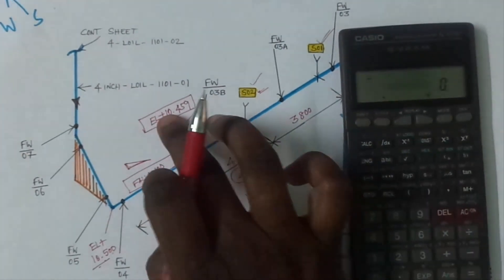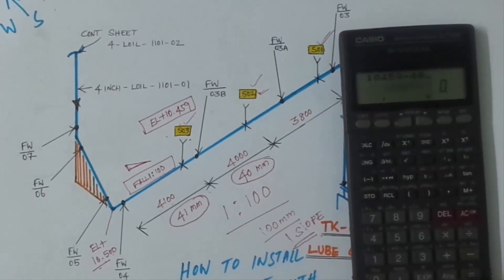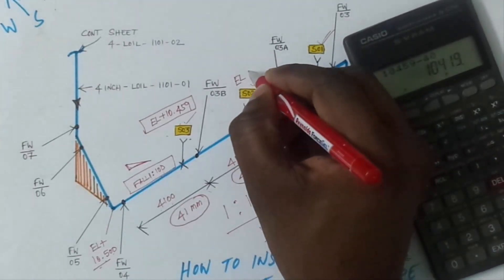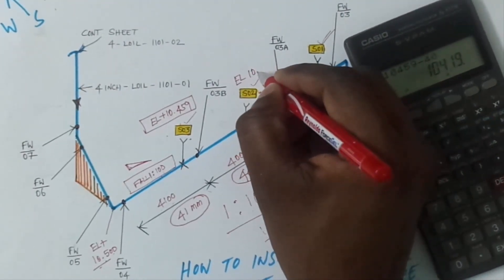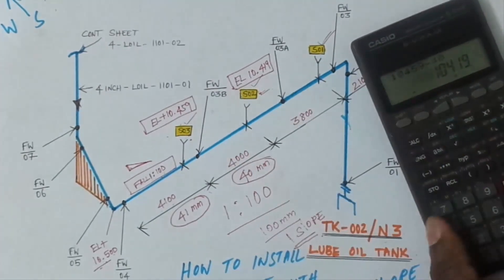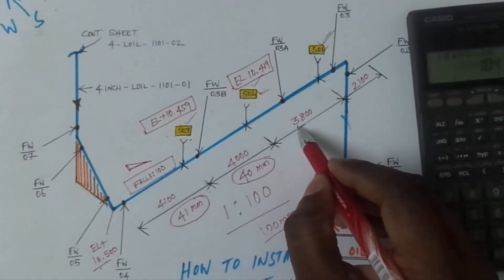So the last elevation is 10.459 minus 40, so elevation is 10.419 mm for support number 2. Then support number 1 is 3.5 meter.